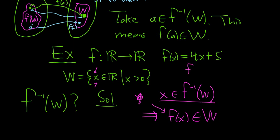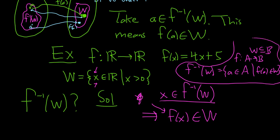Recall, if you have f inverse of W, the definition was, it's the set of all a in A, such that f of a is in W. And this is assuming that you have f from A to B, that W is a subset of B. So this is the definition that we're using here. So when you take x in here, that means f of x is in W, right? So our a is x. f of x is in W.